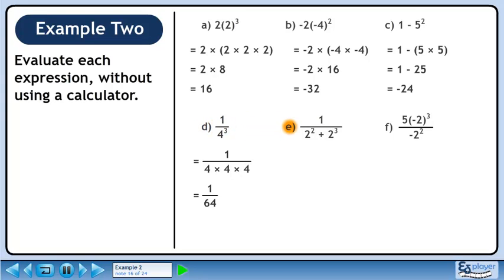In Part E, we'll calculate 1 over 2 squared plus 2 cubed. 2 squared is the same as 2 times 2. 2 cubed is the same as 2 times 2 times 2. This gives us 4 plus 8 in the denominator. The answer is 1 over 12.